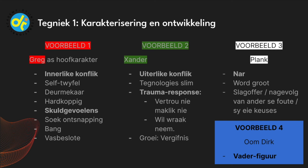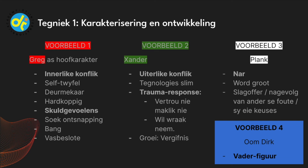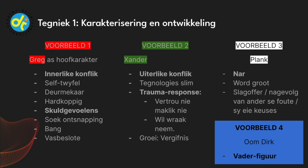The first example is Greg as the main character — Greg experiences inner conflict. If you look at the question of how does he speak and what does he say, we know that Greg has a lot of inner conflict because we can hear his thoughts. Why? Because the book is written in the first person storyteller version — so it's 'ek' throughout — giving us an insight into the main character's mind.